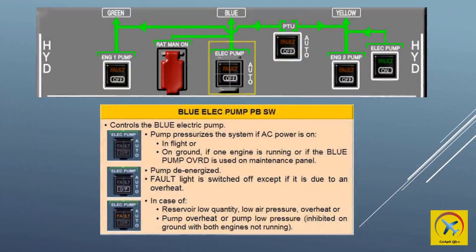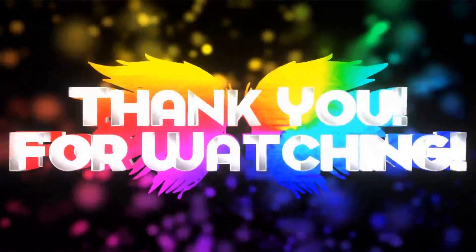The blue ELEC pump operates if AC power is available when in flight, or on the ground if one engine is running. When the blue ELEC pump switch is selected to off, the electric-driven pump is de-energized and the off light illuminates white. The blue ELEC pump fault light illuminates amber for: reservoir low level, reservoir overheat, reservoir low air pressure, pump low pressure — inhibited on the ground when engines are stopped — and pump overheat. The fault light extinguishes when the blue ELEC pump switch is selected off, except during an overheat, when the light remains illuminated as long as the overheat is present.